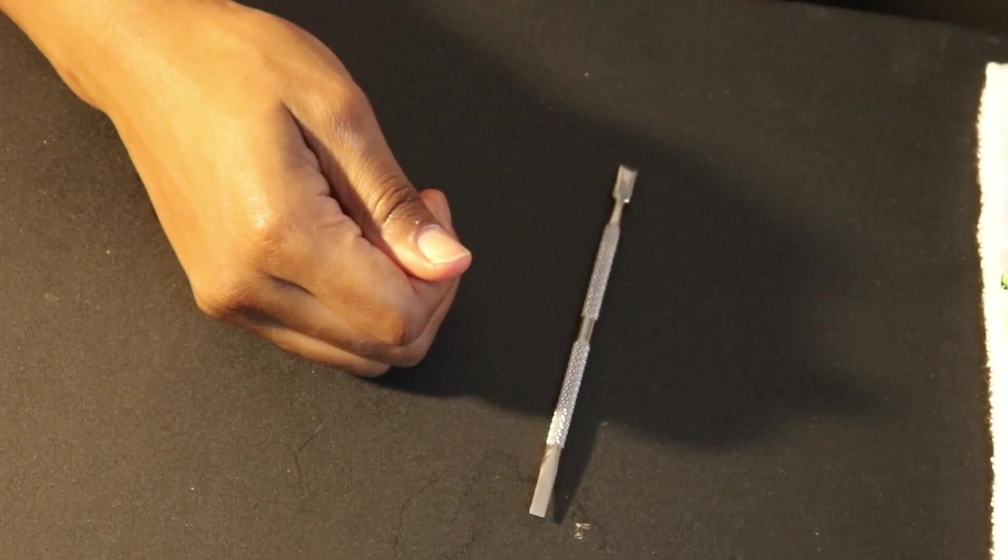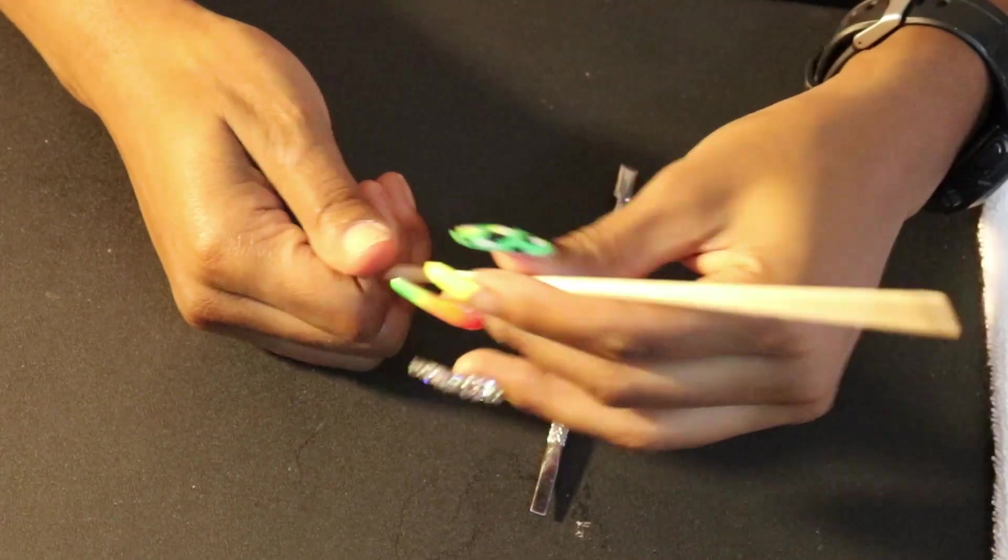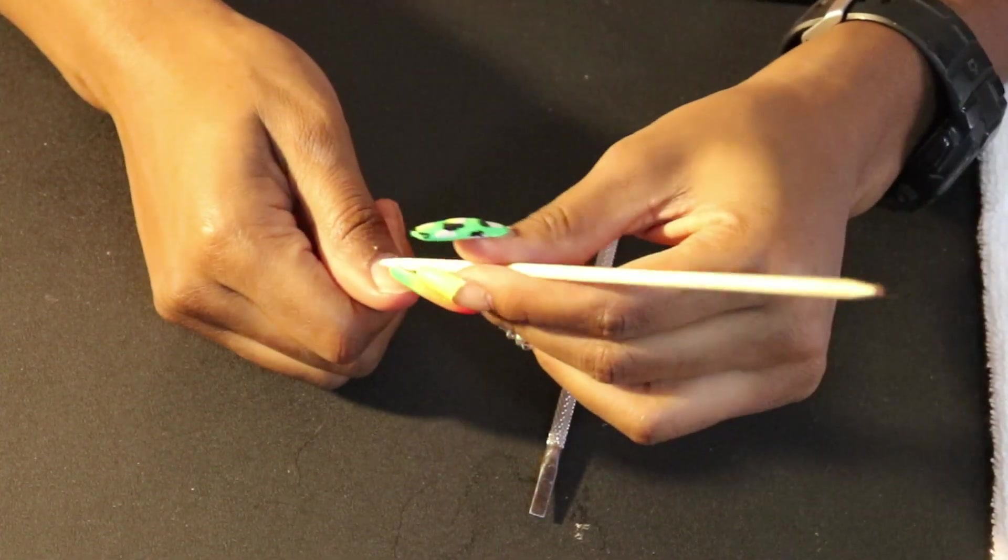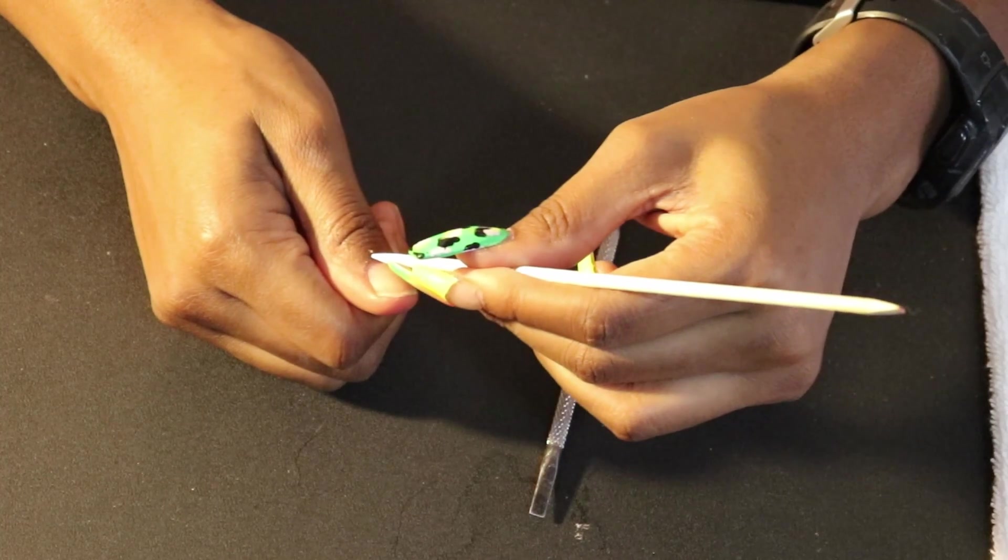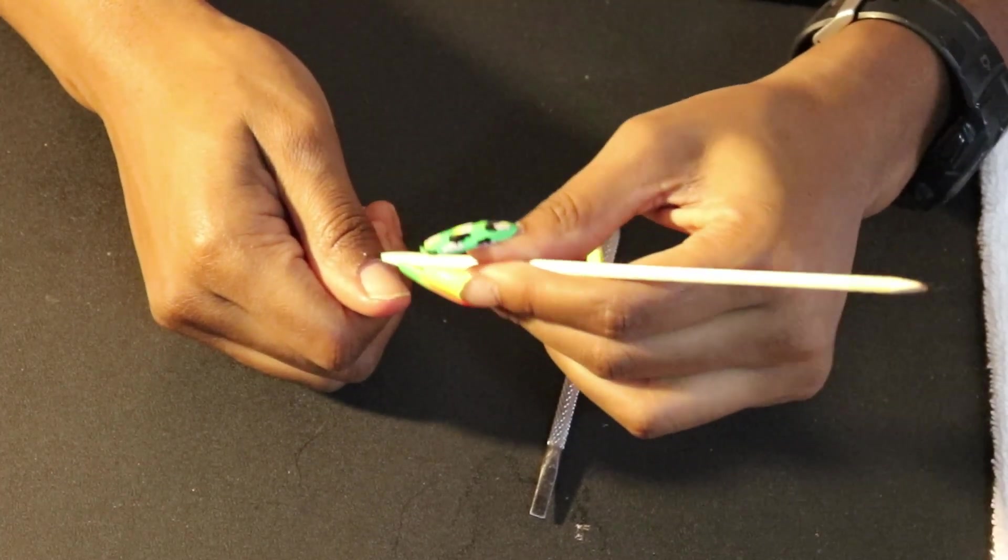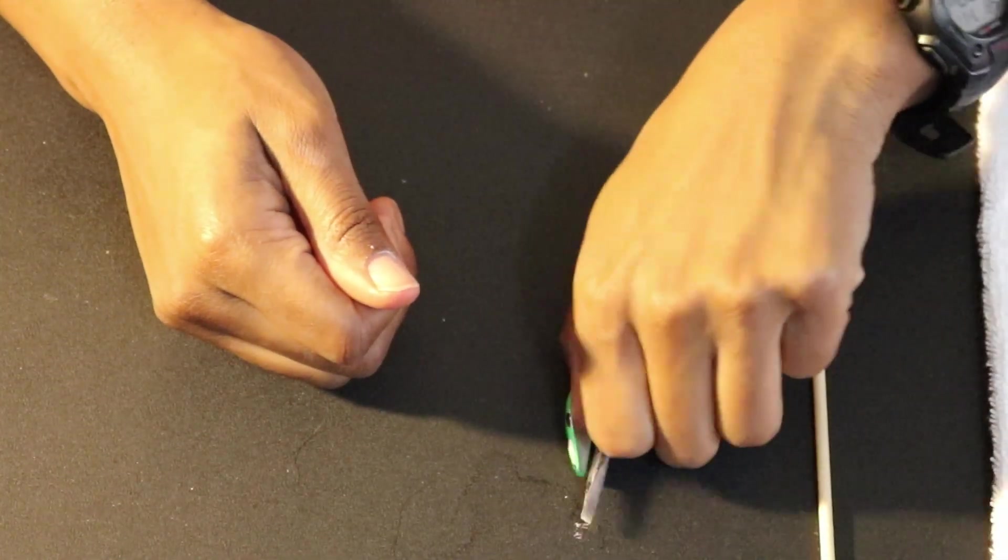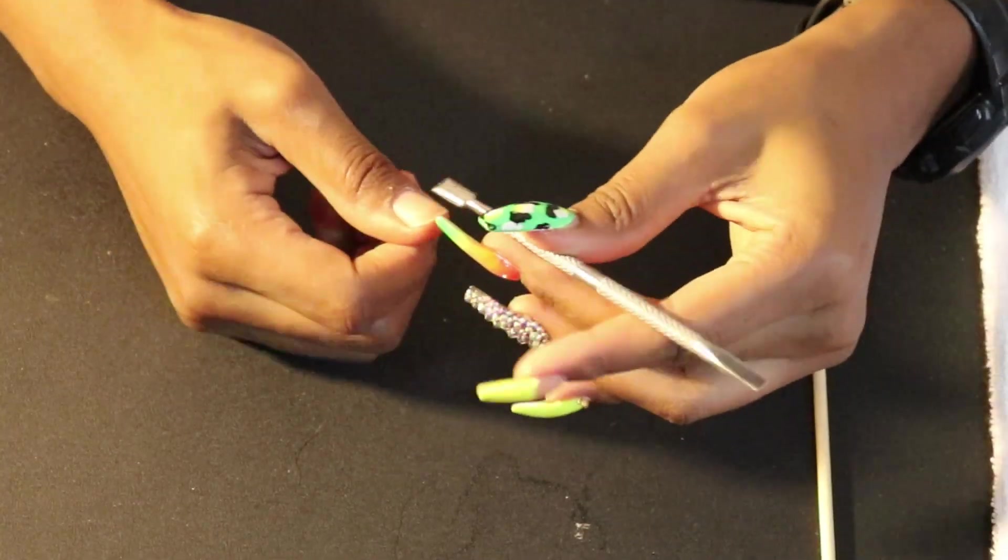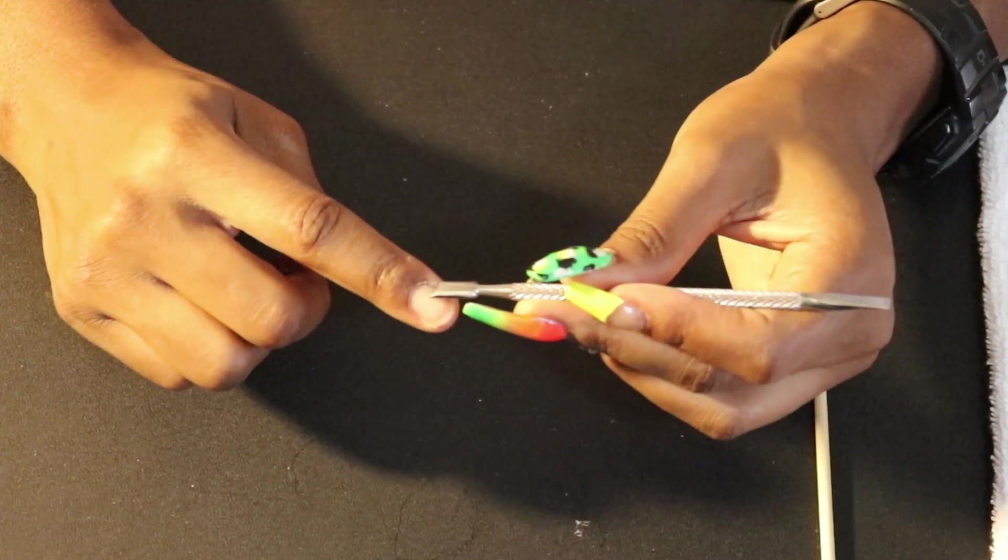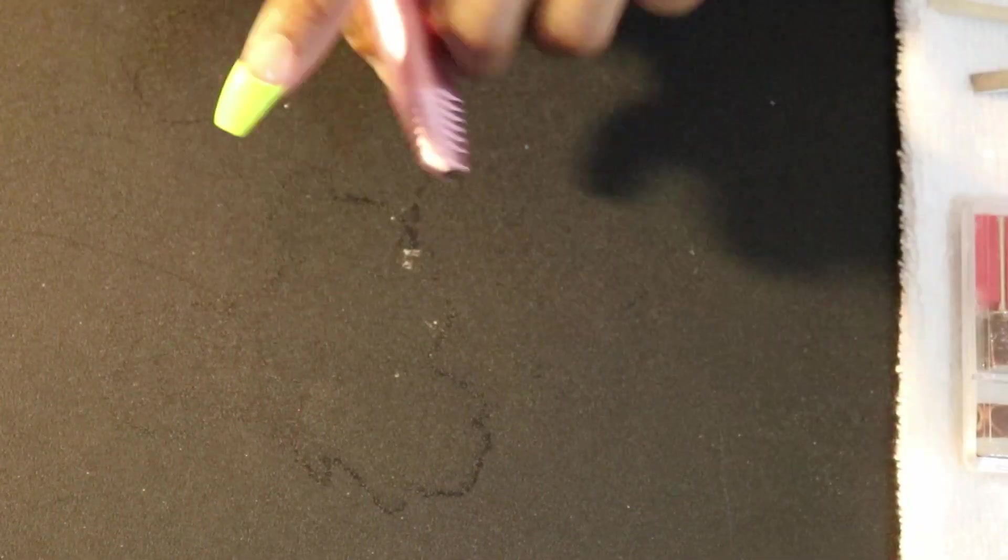If you happen to be sensitive, go ahead and grab an orange stick or wood stick to push back the cuticles. Make sure that you are gentle, and I would even suggest doing this after soaking your hands so that the cuticles can be looser.